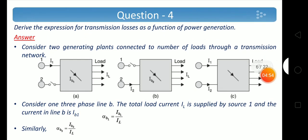Next question: Derive the expression for transmission losses as a function of power generation. Transmission loss P_L can be written in terms of power generation. Consider two generating plants connected to a number of loads through a transmission network. In figure A, only generating unit 1 is connected to the load. In figure B, only generating unit 2 is connected to the load. In figure C, both units are connected to the load. If I_L is the load current and I_B1 is the current through three-phase line B, then alpha_B1 = I_B1/I_L, where alpha_B1 is the current distribution factor which depends on the network parameters.